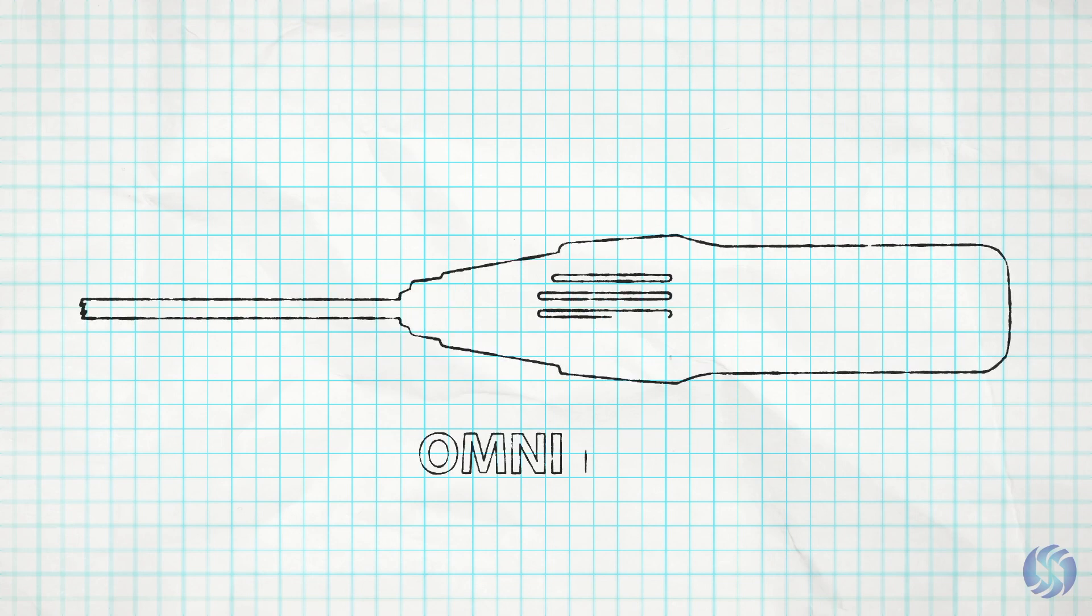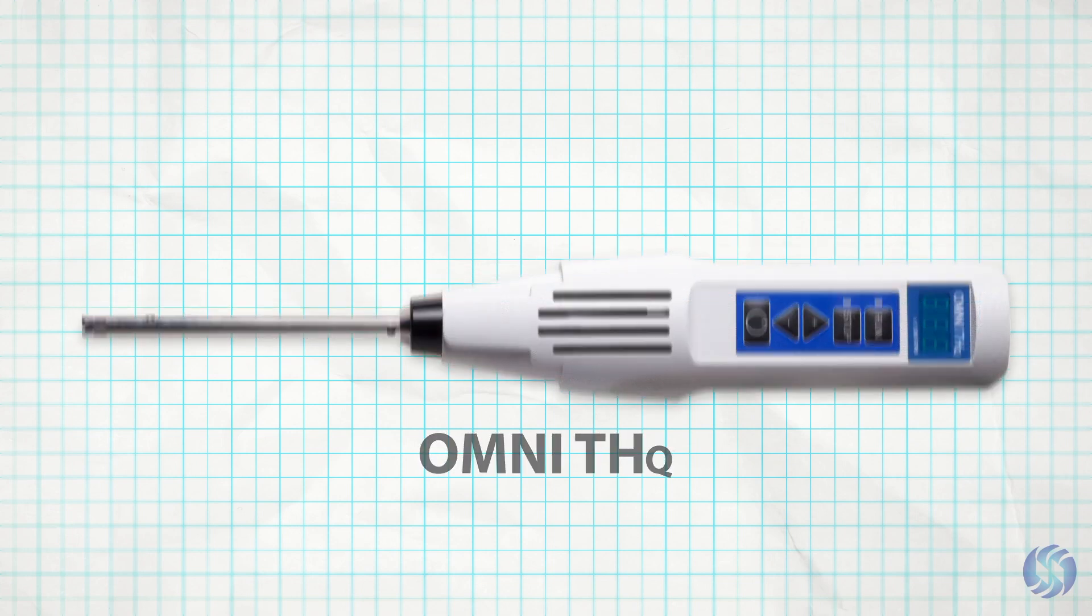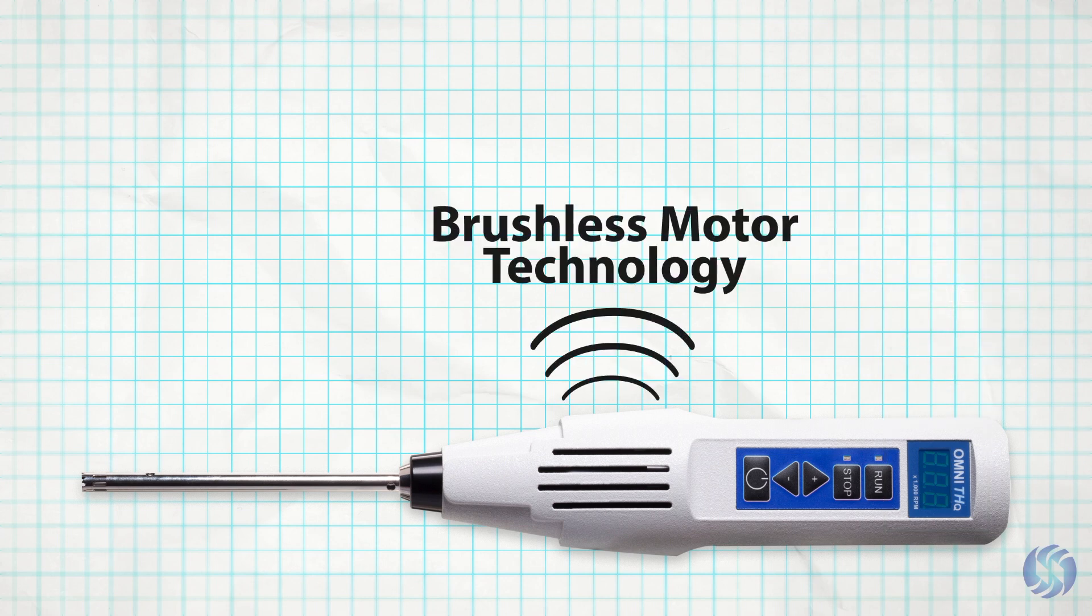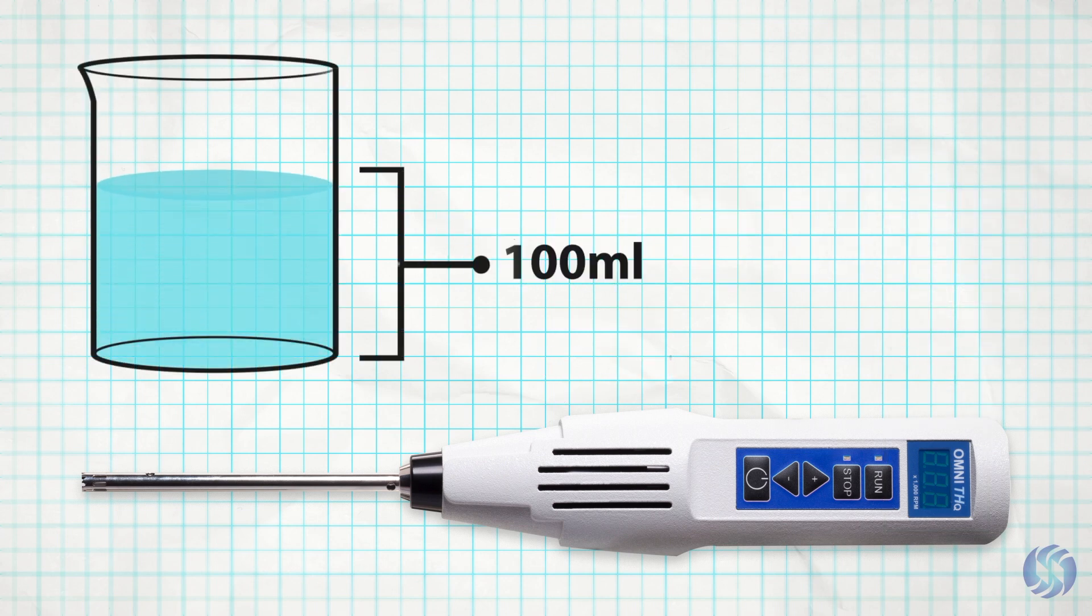For applications requiring precision and repeatability, the Omni THQ combines a digital speed display with quiet brushless motor technology to process up to 100 milliliters sample volumes.